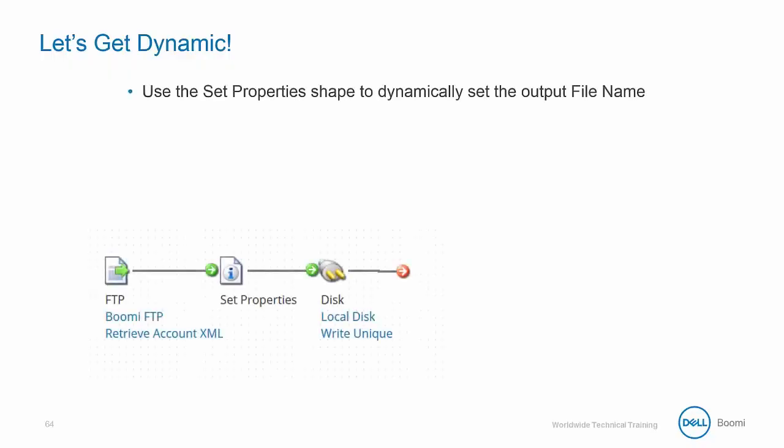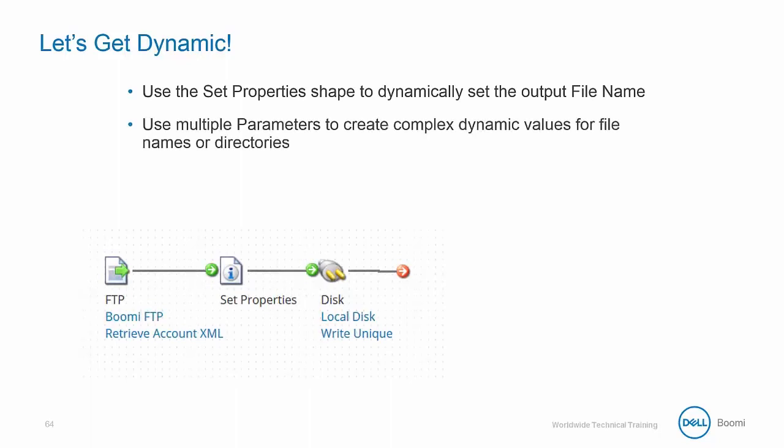We can set a dynamic output file name using the set property shape. You can even use multiple parameters to create complex dynamic values for file names or directories.